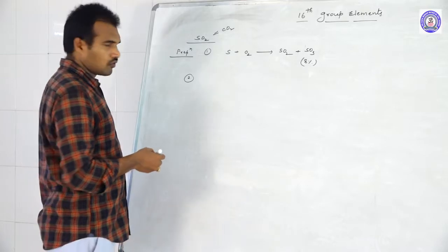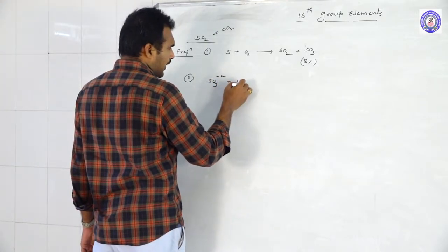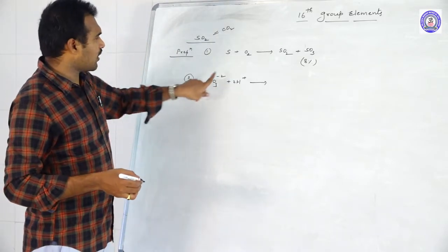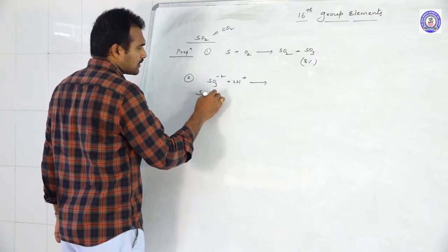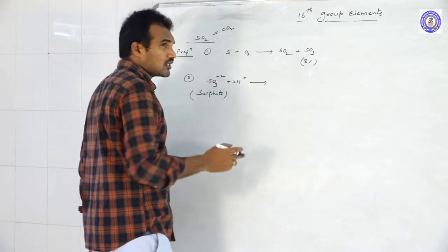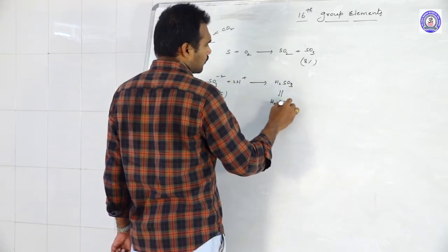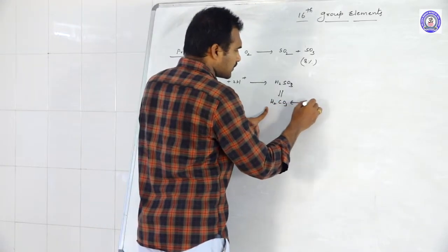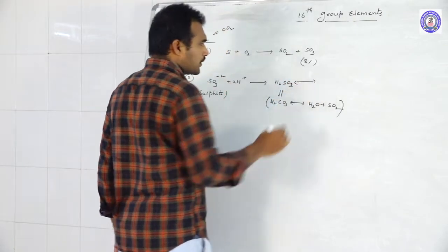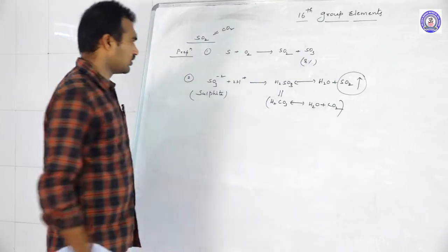The second method: use a sulfite source. When sulfite salts like Na2SO3 or K2SO3 react with acids (H⁺ ions), we get H2SO3 first — but H2SO3 is unstable, just like H2CO3. H2CO3 immediately splits into H2O and CO2. Similarly, H2SO3 splits into H2O and SO2 gas. This shows the similarity between sulfurous acid and carbonic acid.